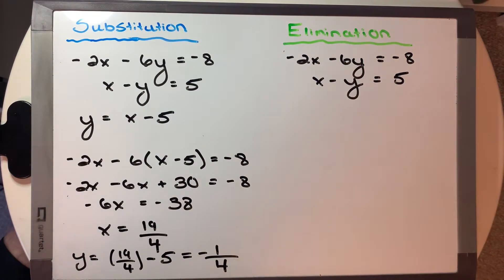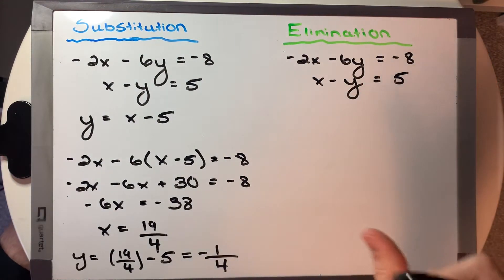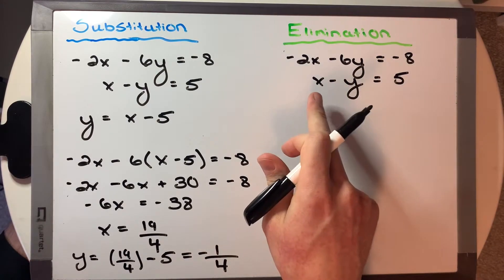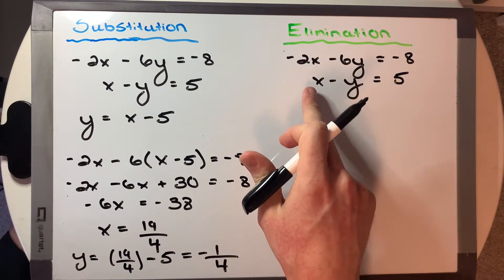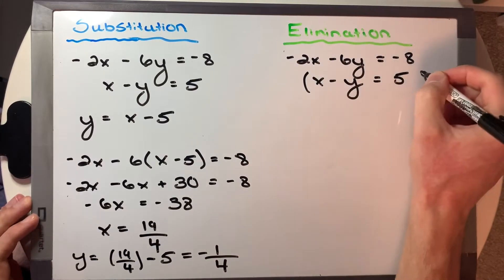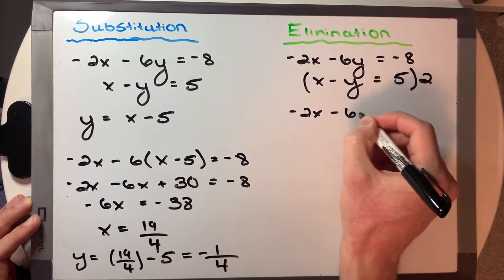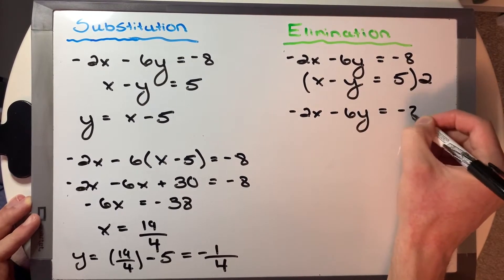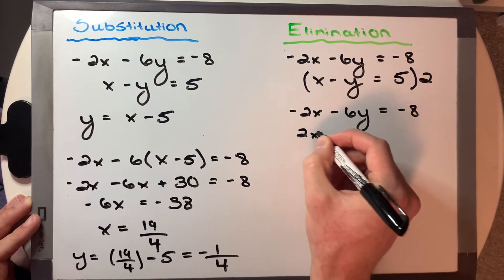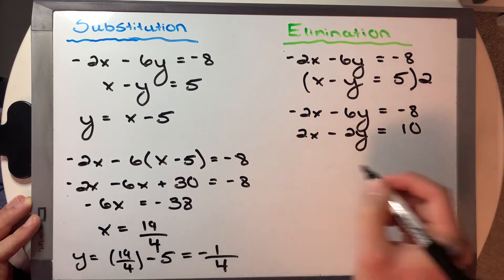But let's confirm that over here with our elimination case. So with elimination, we want to get x values or y values such that those cancel. I'm seeing the easiest way to do this would be to multiply the second equation by 2, which will cancel the x's. So we're going to multiply that one by 2. Now let's rewrite both our equations here.